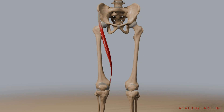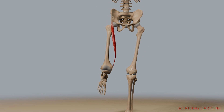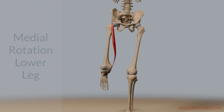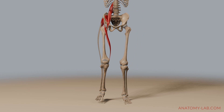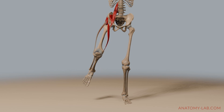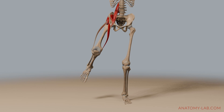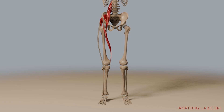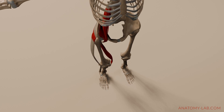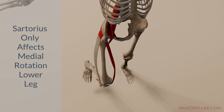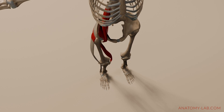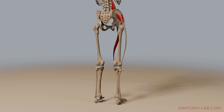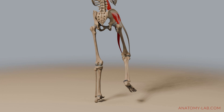Now here comes the function that is most important for this video. The sartorius rotates the lower leg medially, meaning it helps to turn the lower leg inward. This is exactly where I made my mistake. The movement I chose was somewhat a special case — the sartorius only affects the medial rotation of the lower leg in this movement and isn't responsible for the internal rotation of the hip. So I should have been more thorough in my explanation or selected a less confusing movement.